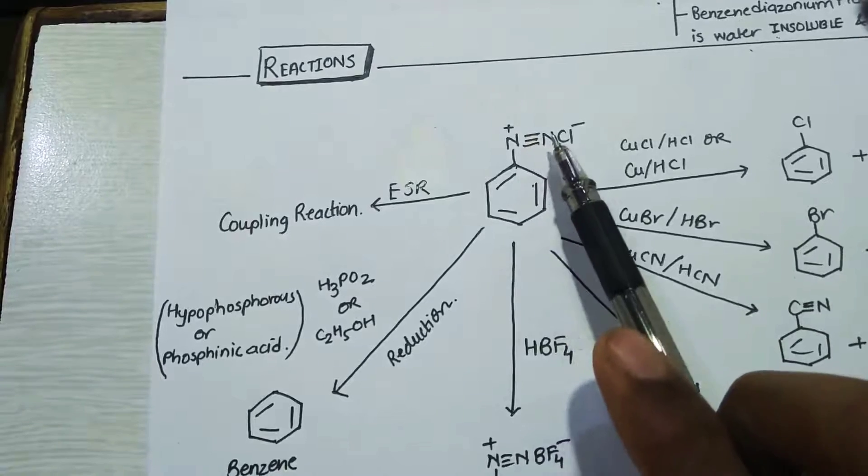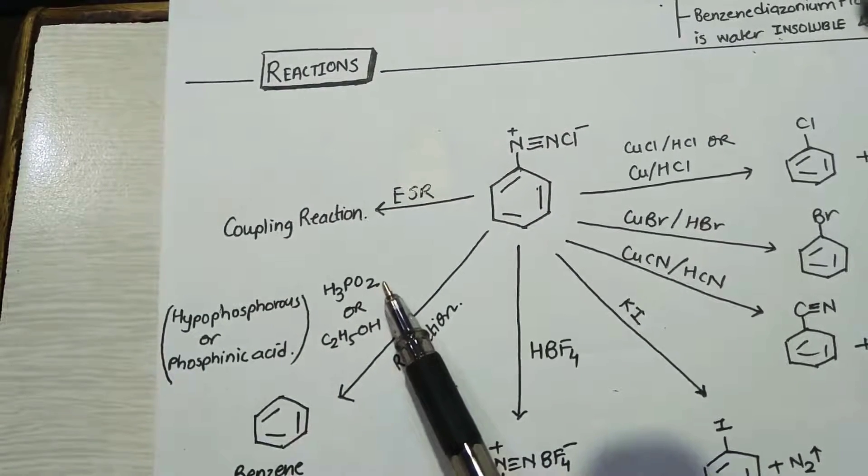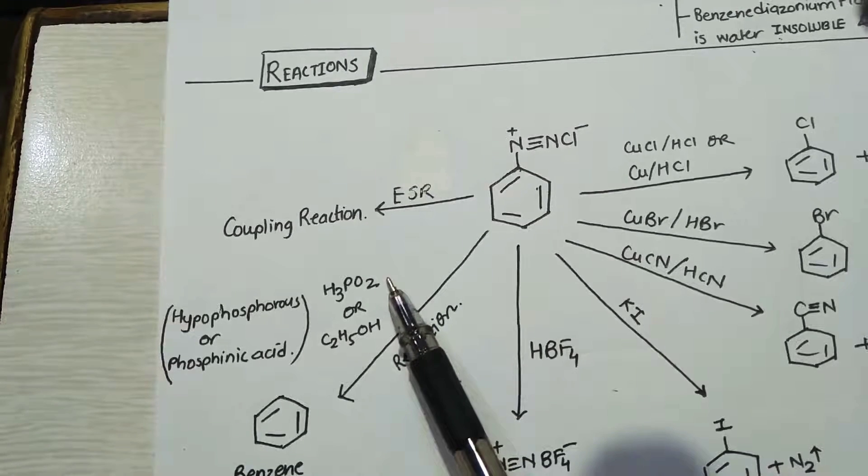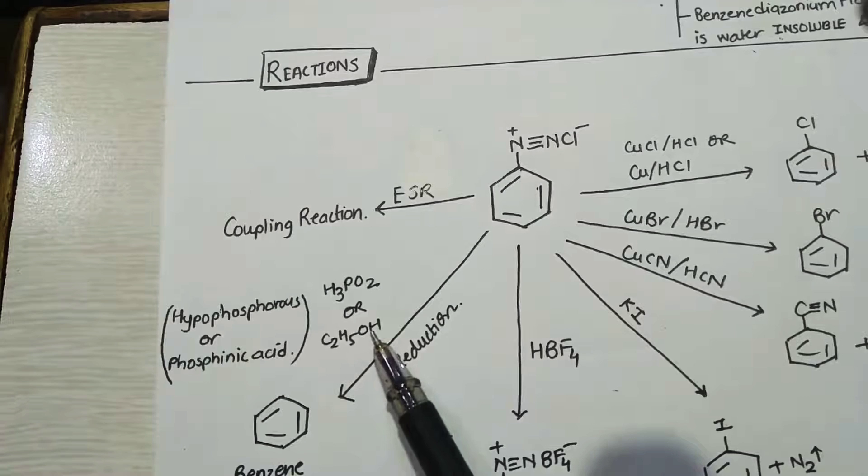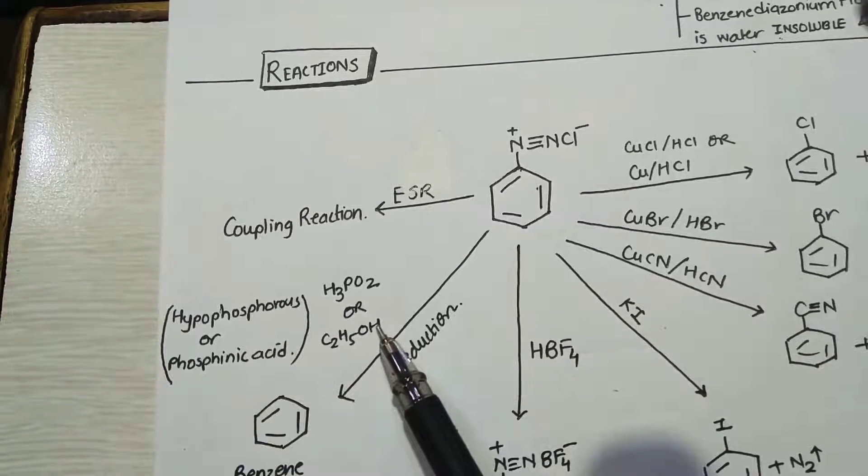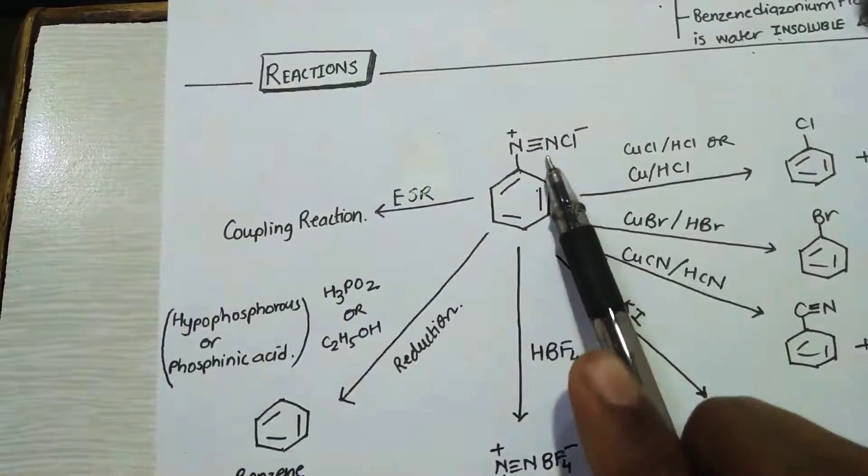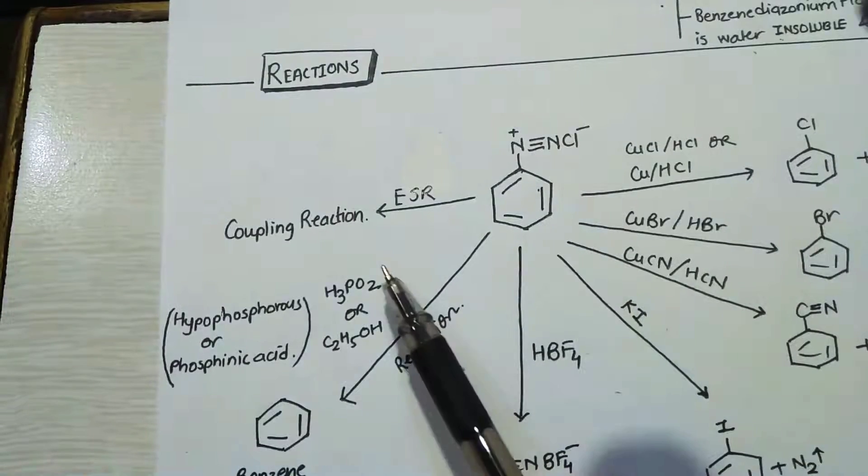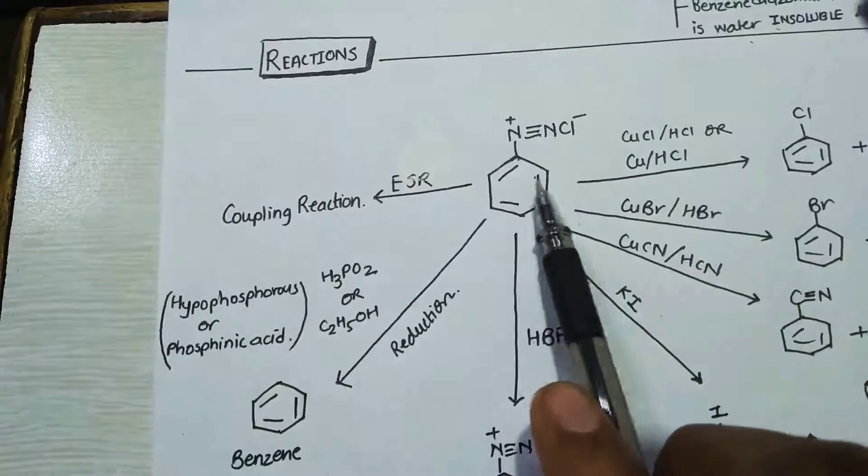Phosphinic acid, when it reduces the other compound, will itself get oxidized. It will form phosphoric acid. Similarly, ethanol, when it oxidizes the other compound, will itself get reduced and become aldehyde. Right, so do remember, for reduction, that means for replacement of H, what will you use: phosphinic acid and ethanol. Now the other reaction which I mentioned was ESR. So all the coupling reactions of diazonium chloride are referred to as ESR, that is electrophilic substitution reaction.